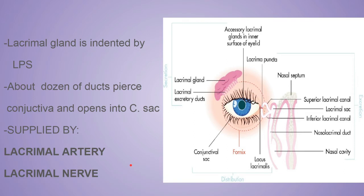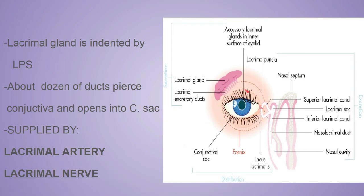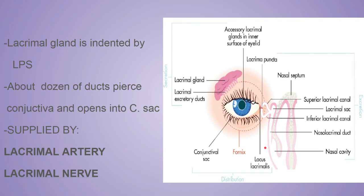The lacrimal fluid secreted by the lacrimal gland flows into the conjunctival sac, where it lubricates the front of the eye and keeps the deep surface of the eyelids moist. Periodic blinking helps spread the fluid all over the eye, since the ducts open into the conjunctival fornix. Most of the fluid evaporates, and the rest is drained by the lacrimal canaliculi into the nasal cavity. When excess fluid occurs it causes tear formation.